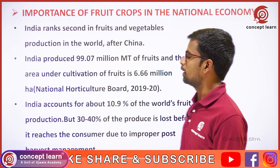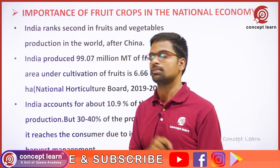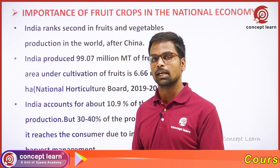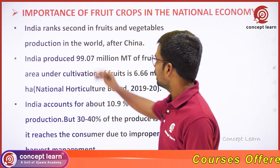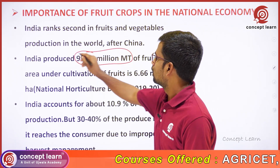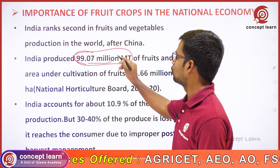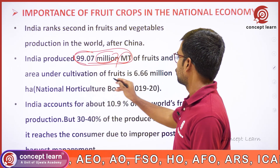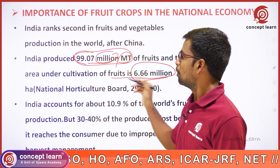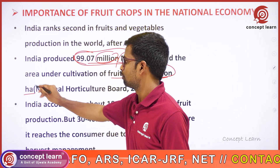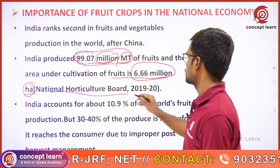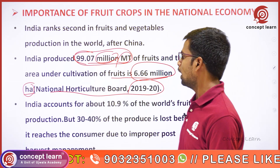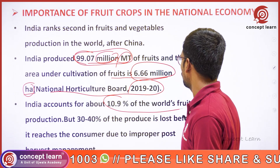Importance of fruit crops in the national economy. In fruits and vegetables production, number one place is China; India is in second place. India produces 99.7 million metric tons of fruits, with an area of cultivation of 6.6 million hectares — not acres — as per the National Horticulture Board 2019-20 census. India accounts for about 10.9% of world fruit production.